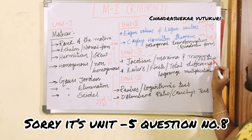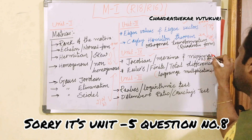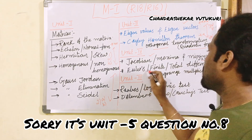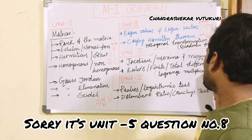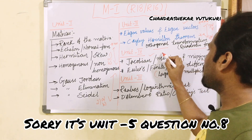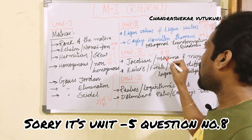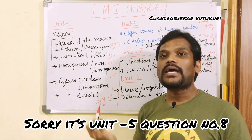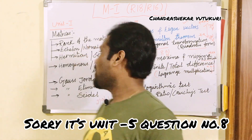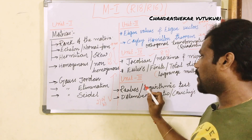Unit 4 is all about the Jacobian and maxima and minima for two and three variables using Lagrange multipliers — very very important and a sure-shot question. Euler's theorem, finite differences, and total differences may also be asked. This question in the paper is 8a and 8b, and sometimes from this unit they ask a direct 15-mark question.